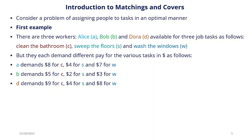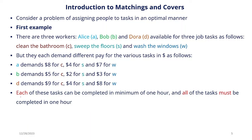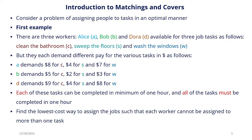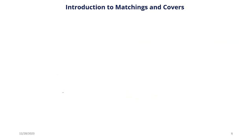You will realize that D seems to offer the lowest cost for the tasks. However, we cannot just assign all of the tasks to D because there are conditions that must be met. Each task can be completed in a minimum of one hour and all tasks must be completed in one hour. So the problem is to find the lowest cost way to assign the jobs such that each worker cannot be assigned to more than one task.